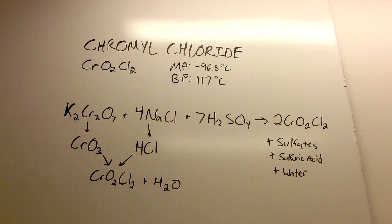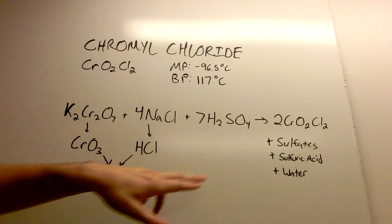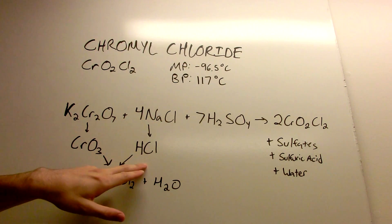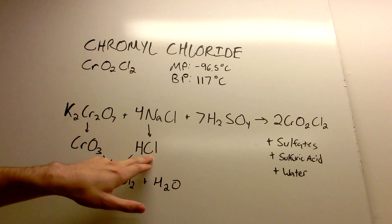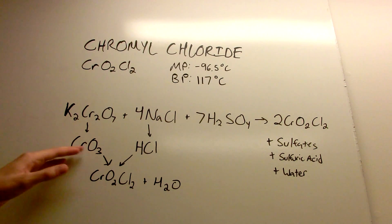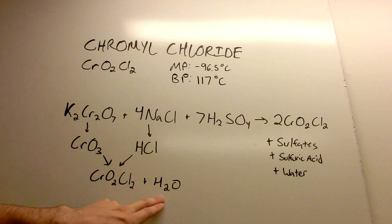I'll explain what's going on here. The sulfuric acid will react with potassium dichromate to form chromic acid and then dehydrate the chromic acid to its anhydride, which is chromium trioxide. At the same time, the sulfuric acid will react with sodium chloride to form sodium sulfate and hydrochloric acid. The hydrochloric acid, or hydrogen chloride I should say, will react with the chromic anhydride to form our chromal chloride and some excess water.